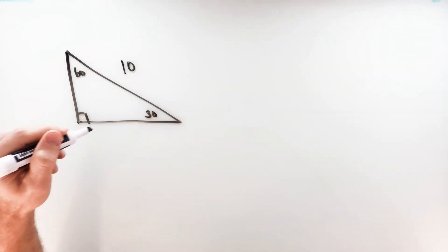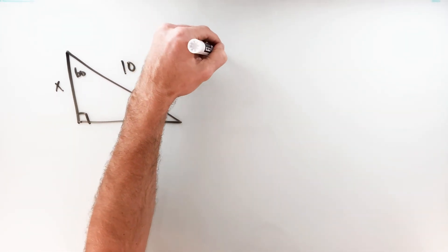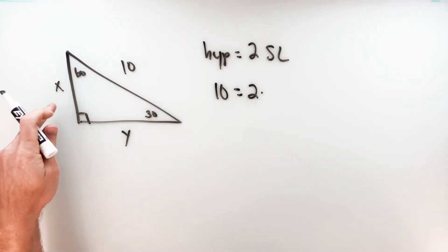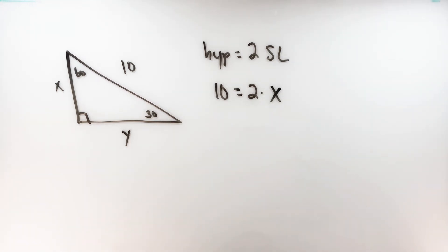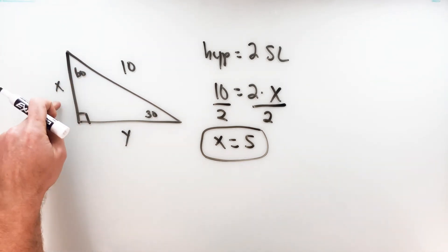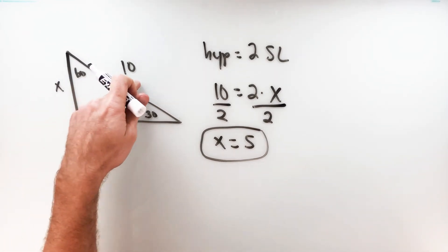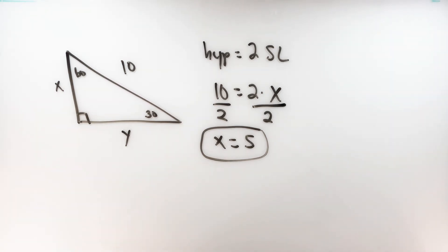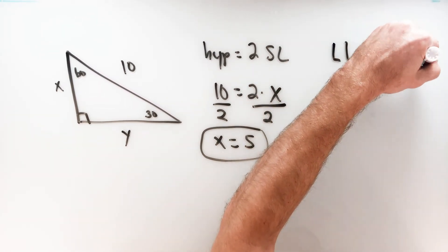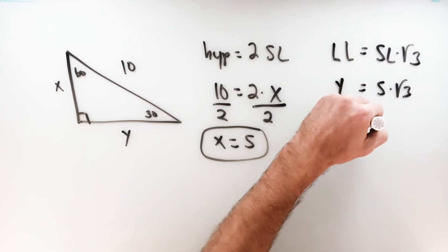Now let's say we know the hypotenuse is 10 and we're missing the shorter leg and longer leg. We know the hypotenuse equals two times the short leg, so 10 equals 2X. Dividing both sides by two, X equals 5 — the short leg is 5. Once we know the short leg is 5, getting the longer leg is simple: multiply by root 3 to get five root 3.